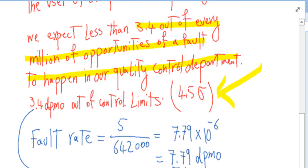Now the fault rate in this case is 5 out of 642,000. That means we have to find this ratio.